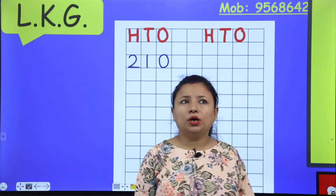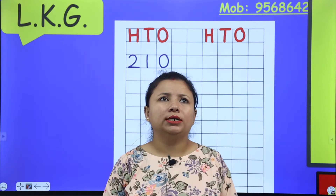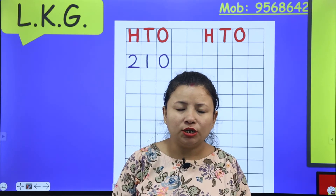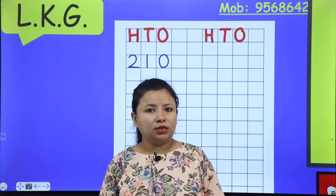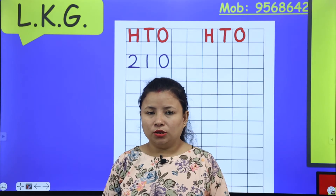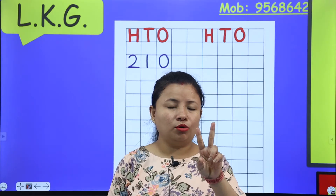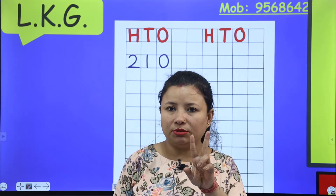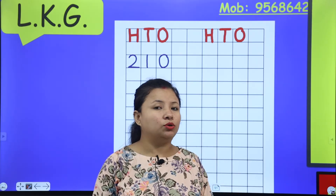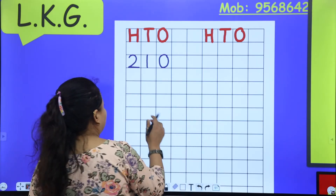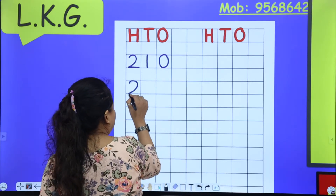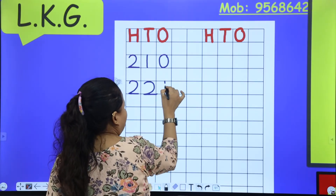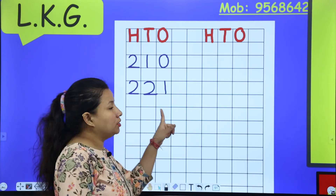The second number is two hundred twenty-one. Two hundred means two, twenty means two in the tens place, and one. So two hundred twenty-one — we write two, then twenty which means two, and one: 221.